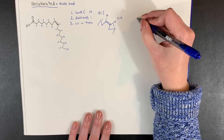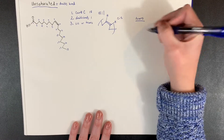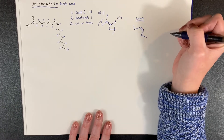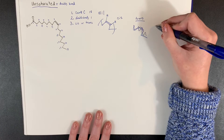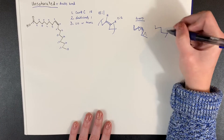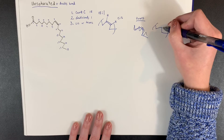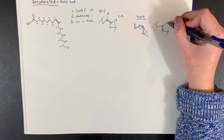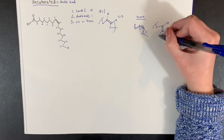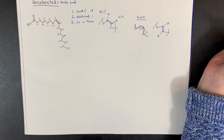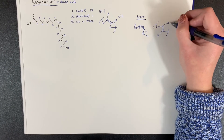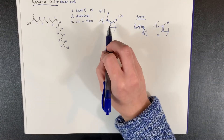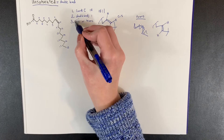You might be wondering what the trans version would look like. For trans, the double bond would look like this — one hydrogen here and the other hydrogen is actually coming out the other side. So there's one hydrogen on the right side, one hydrogen coming out on the left side. But what we have in this example is cis.